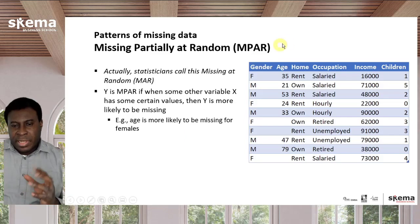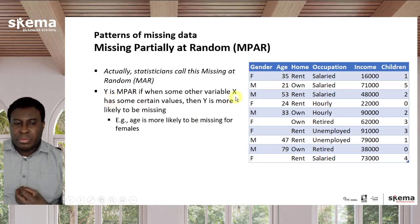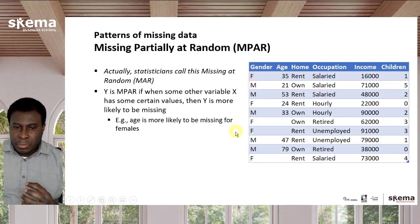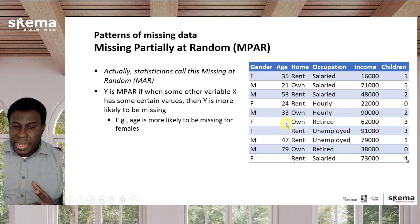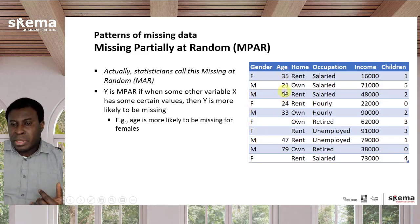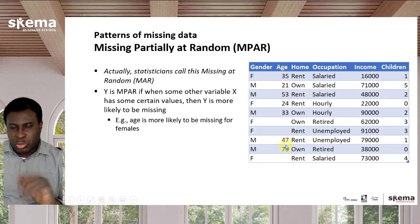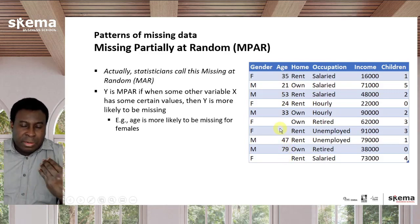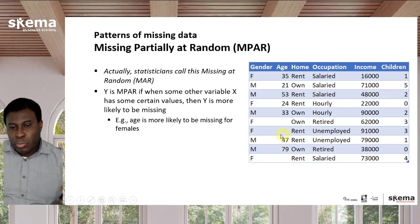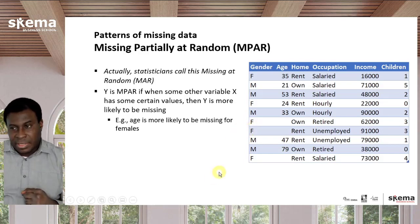A column is missing partially at random when some other variable having certain values makes it more likely to be missing. If you were able to find it: every time age is missing here, it happens to be for a female. There are some females for whom age is not missing, but age is never missing for a male. It won't usually be that drastic in a real dataset, but this reflects a true stereotype — that women are generally less likely to reveal their ages than men.